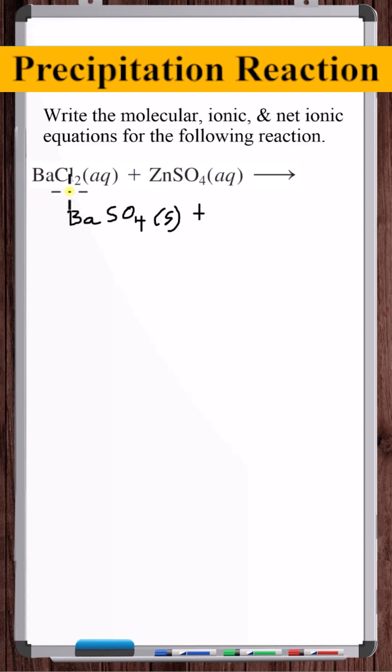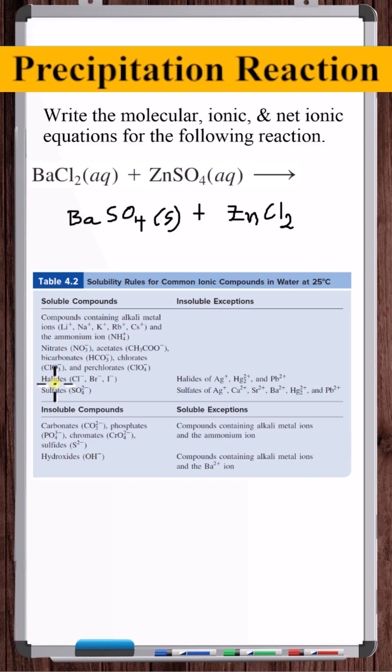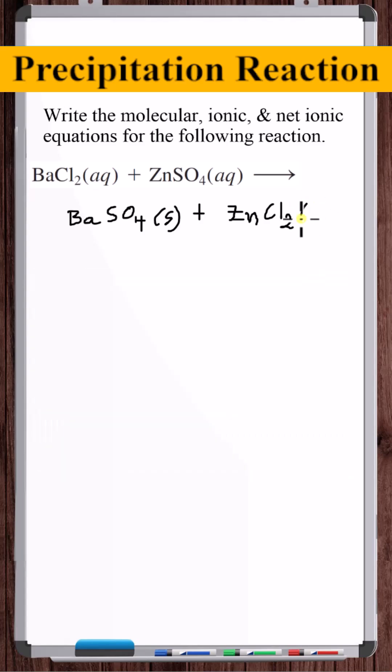Zinc chloride, Zn2 plus Cl minus, so ZnCl2. All halides are soluble. Zinc is not an exception. This is aqueous.